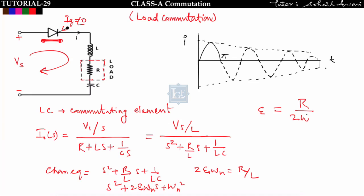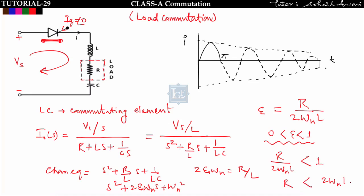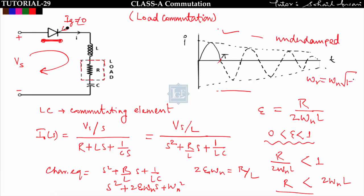In order to make this system under-damped, ζ must lie between 0 and 1, meaning ζ < 1. So R / (2ωₙL) must be less than 1, which means R must be less than 2ωₙL. Only then will this system be under-damped, and I will get an under-damped current response. The ringing frequency of this under-damped system is ωᵣ = ωₙ√(1 − ζ²).